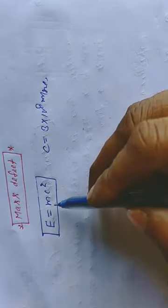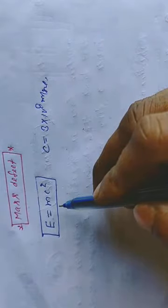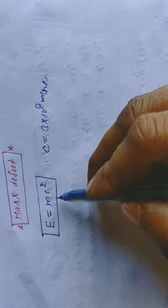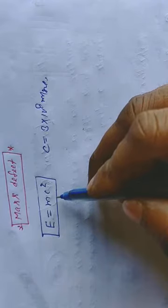This equation suggests that if a particle is at rest, meaning its kinetic energy is zero, it still possesses an enormous amount of energy because of its mass.